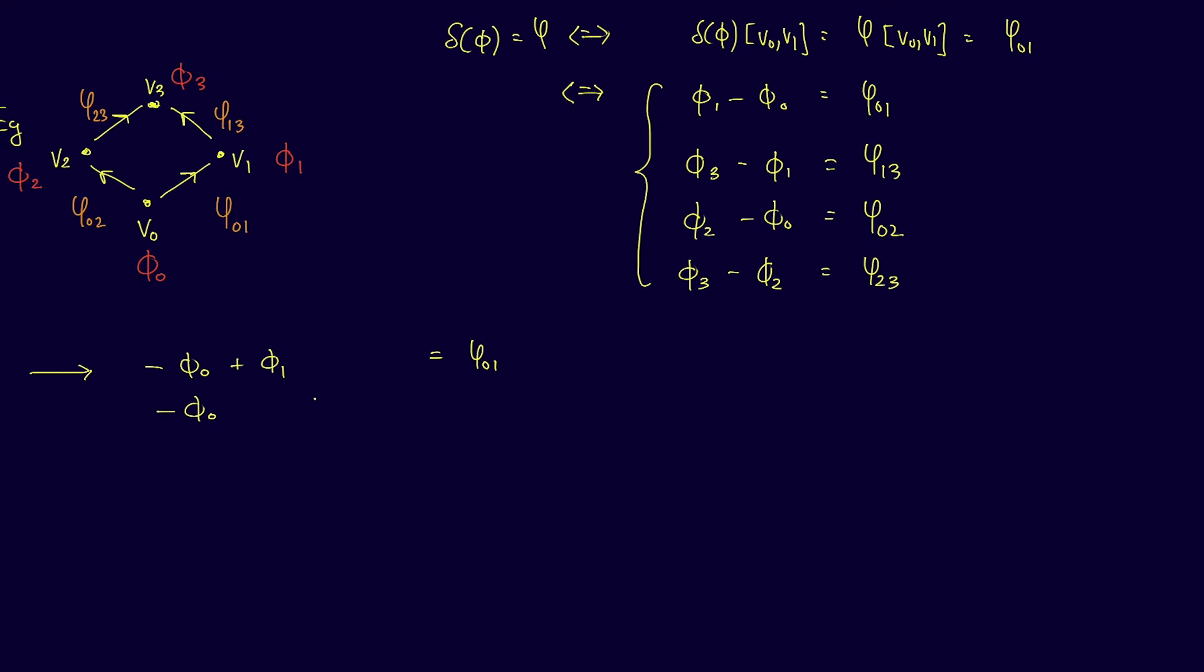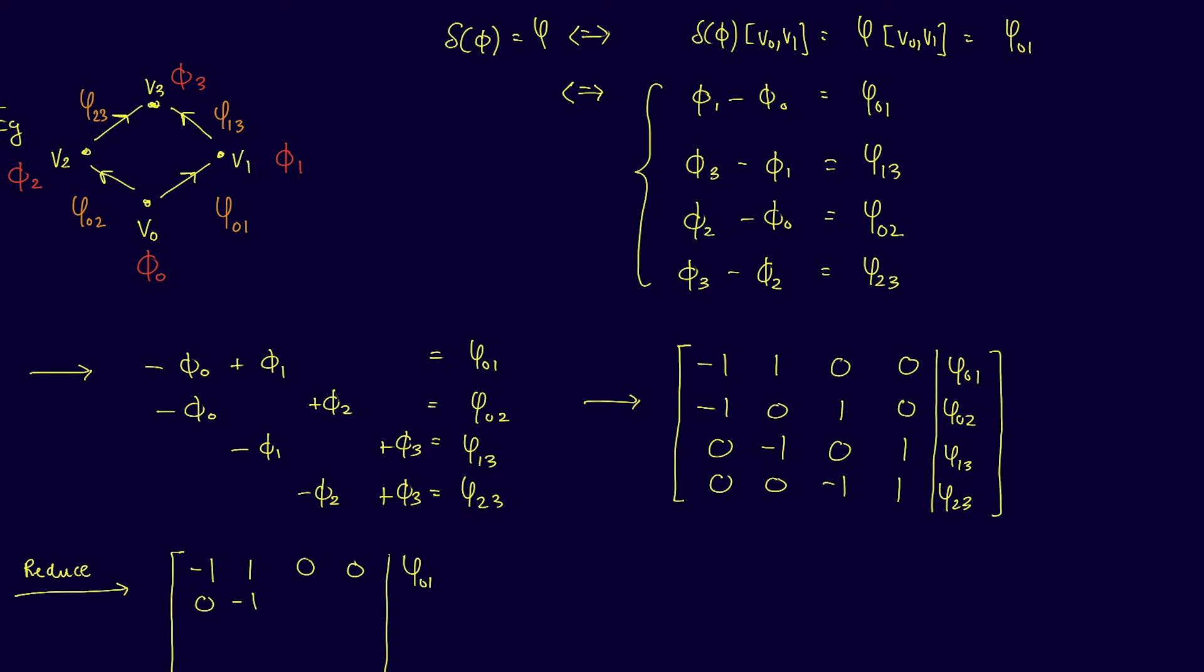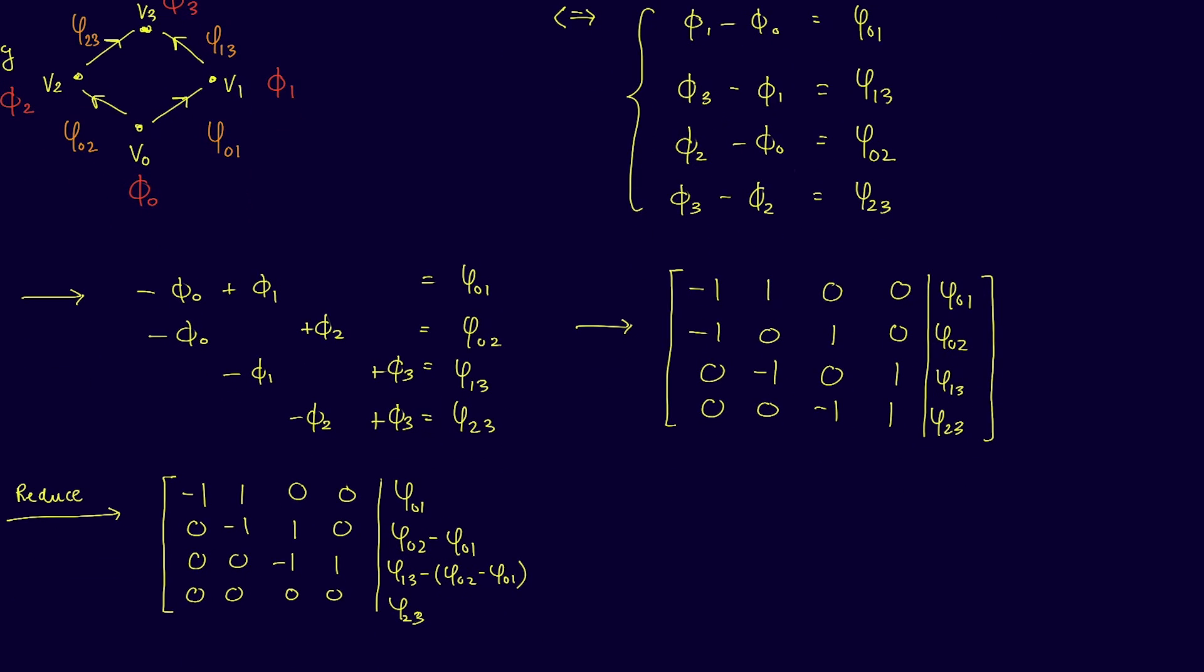We can write these equations more suggestively as follows. This can then be written in matrix form like so. And now we just have a simple linear algebra problem. And so we can just reduce the matrix and search for a solution. One can easily verify that this matrix reduces to the following matrix.